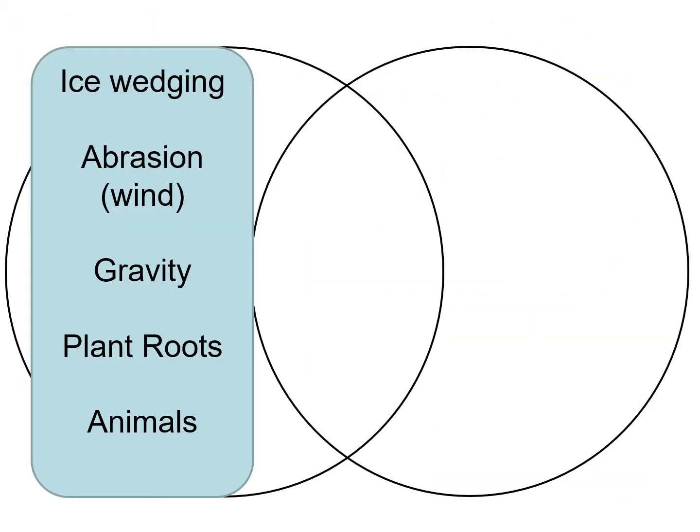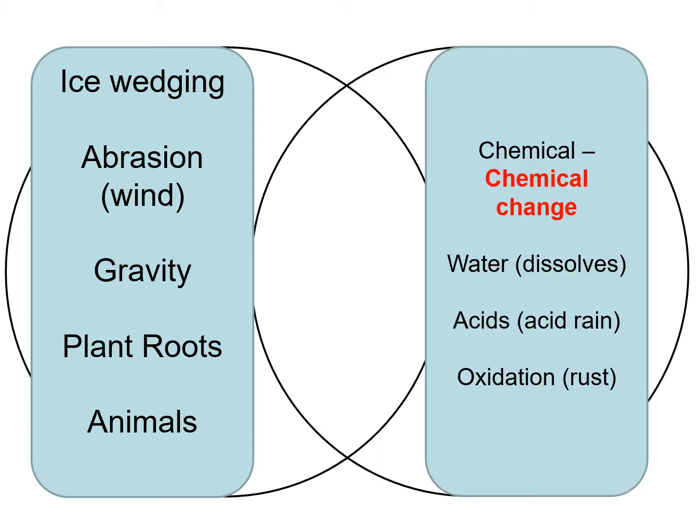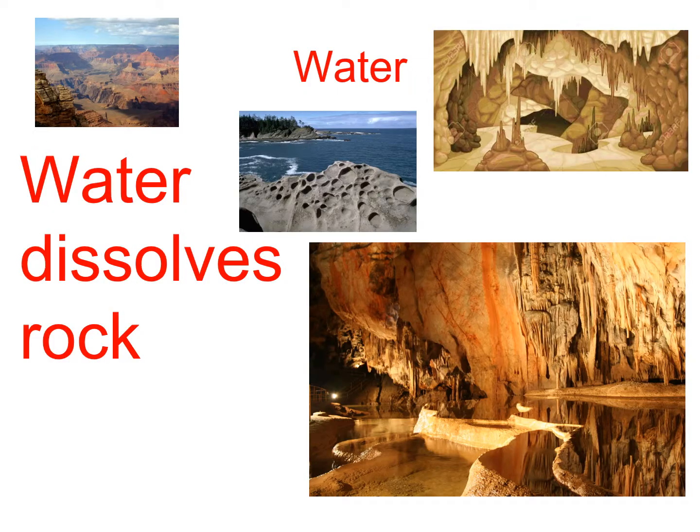Then we have chemical weathering. This is going to be as a result of a chemical change, so there's a reaction happening here. Water, acids, oxidation, and even lichens — like in primary succession — can chemically weather rock.